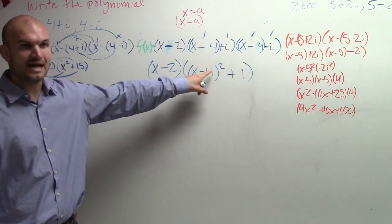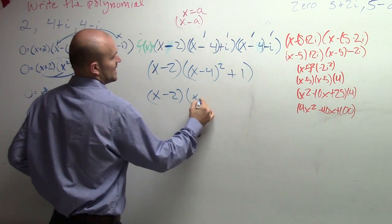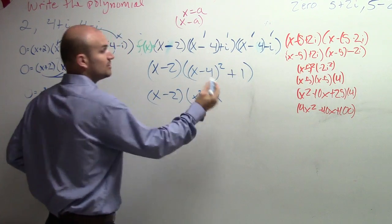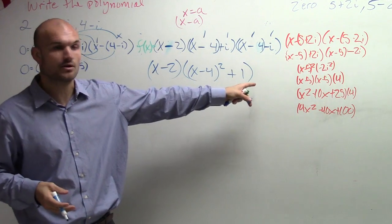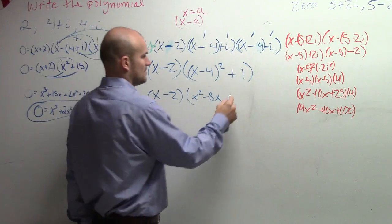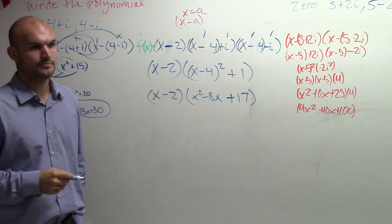Now, what is x minus 4 squared? It's going to be x squared minus 8x plus 16. Right? But now I have the i plus or plus 1, so it's going to be plus 17.